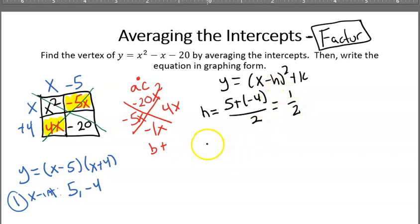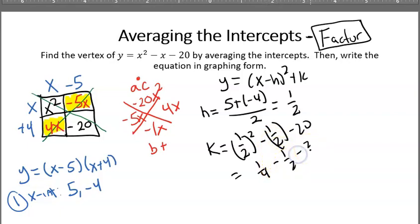Now to find k, k is the value I get when I plug h into my equation that I started with. So let's plug in 1 half here. So I get k is going to equal 1 half squared minus 1 half minus 20. So let's do this. 1 half squared is 1 fourth. That's minus 1 half. That's minus 20.